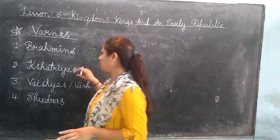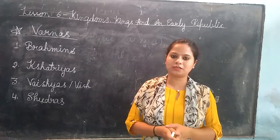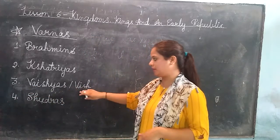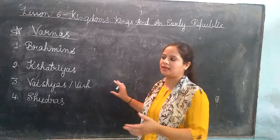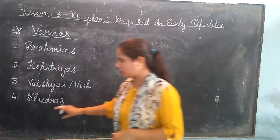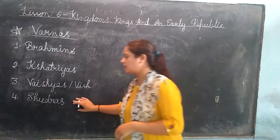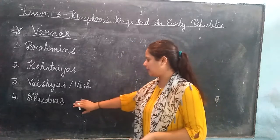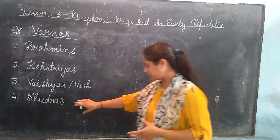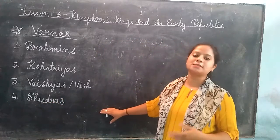The second Varna is the Kshatriyas, whose main function is to fight and protect the people and kingdom. The third Varna is the Vaishyas, who work in trade and provide services. The fourth Varna is the Shudras, who were basically considered untouchable — like hunter-gatherers, basket makers, or those who worked with metal or animals.